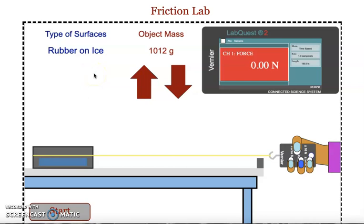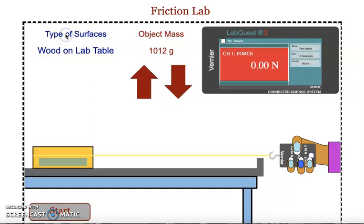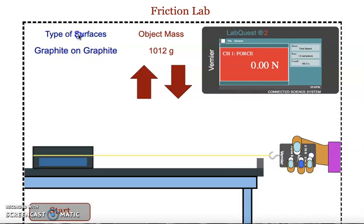You will have been assigned a random pair of surfaces to test in your group, and you're going to be able to toggle to that surface pair by clicking on where it says types of surfaces. So again, you would click on it until it shows the two surfaces that you have been assigned.